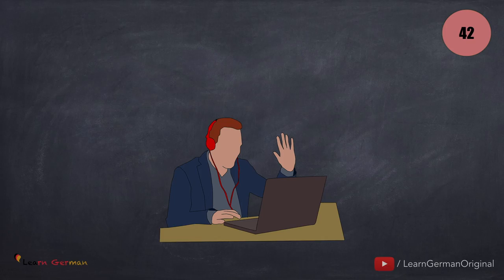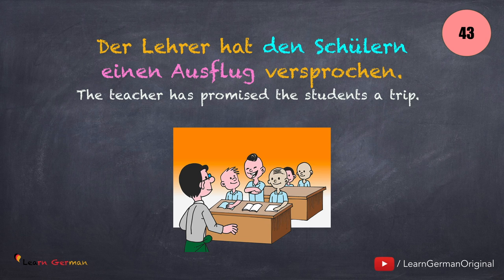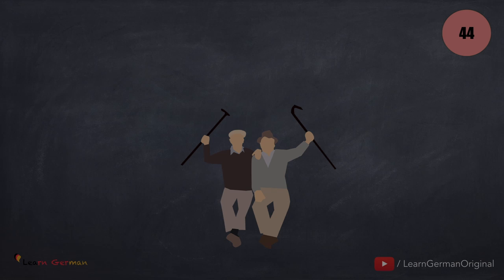In the next sentence, the verb is versprechen: Der Lehrer hat den Schülern einen Ausflug versprochen. Jemandem etwas versprechen.